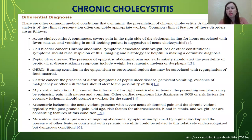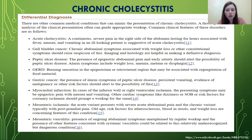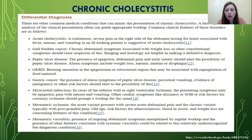Regarding differential diagnosis: diseases similar to chronic cholecystitis include acute cholecystitis — the main difference being pain character, as acute cholecystitis is characterized by acute pain and biliary colic, while chronic cholecystitis presents with less intensive pain. Other conditions in the differential include gallbladder cancer, peptic ulcer disease, gastroesophageal reflux disease, mesenteric ischemia, and myocardial infarction.